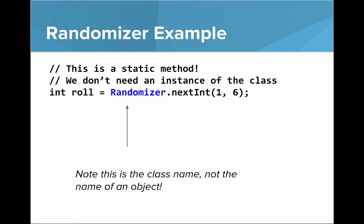If you remember how we use them, we didn't need to create an instance of the Randomizer class. We called it with capital R for Randomizer, then said Randomizer.nextInt. Randomizer is the class name, not the name of an object. That's how you can easily distinguish class methods from instance methods.